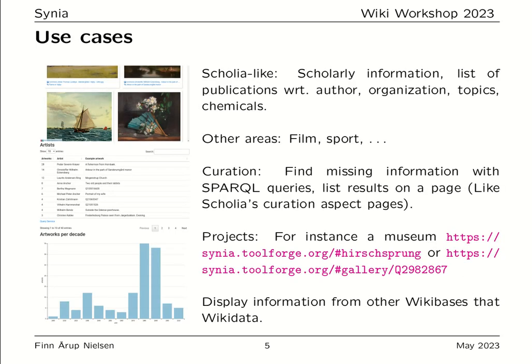Use cases include Scolia-style scholarly information: lists of publications by author, organization, topics, chemicals, and so on. But other areas could also be displayed in Cynia. Currently I've defined aspects for film and actors, but you can imagine sports as well. You can also imagine pages for curation — finding missing information with SPARQL queries and listing the results on a page. Scolia also has curation aspect pages one can be inspired from.